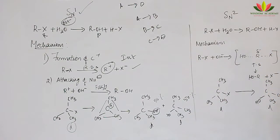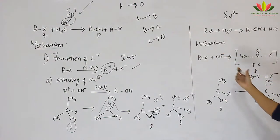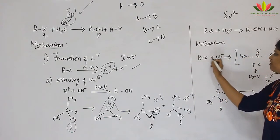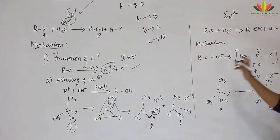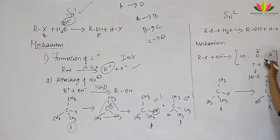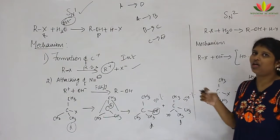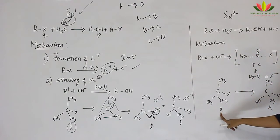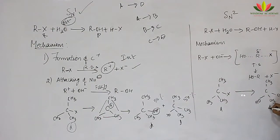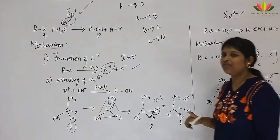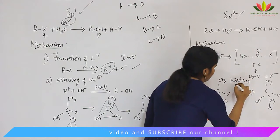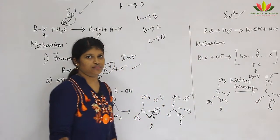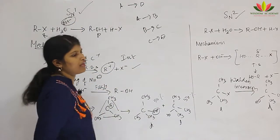Now we will move on to SN2 reaction. In SN2, it is a one-step mechanism: before the leaving group leaves the carbon center, the nucleophile comes and attacks. This state where X has not yet left but OH has started to attack is called the transition state (unlike SN1 which has an intermediate). Since X is still in the molecule, OH cannot come from the same side — it must attack from the opposite side. Therefore, if we start with the D-isomer, we get the L-isomer as product. This is called inversion, specifically Walden inversion. So SN1 gives racemization and SN2 gives Walden inversion.